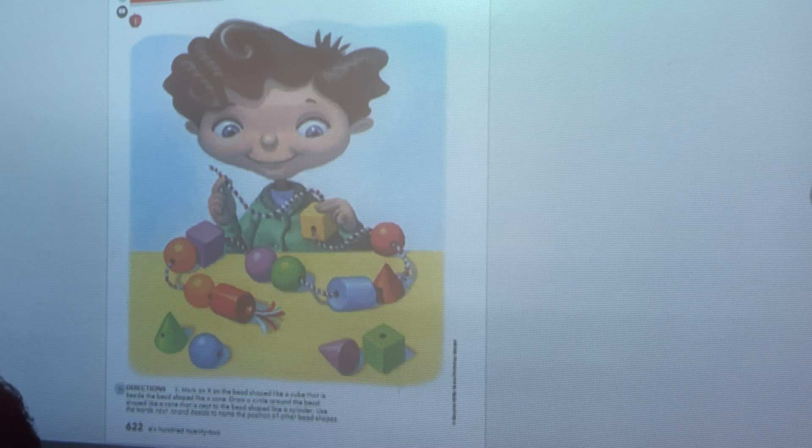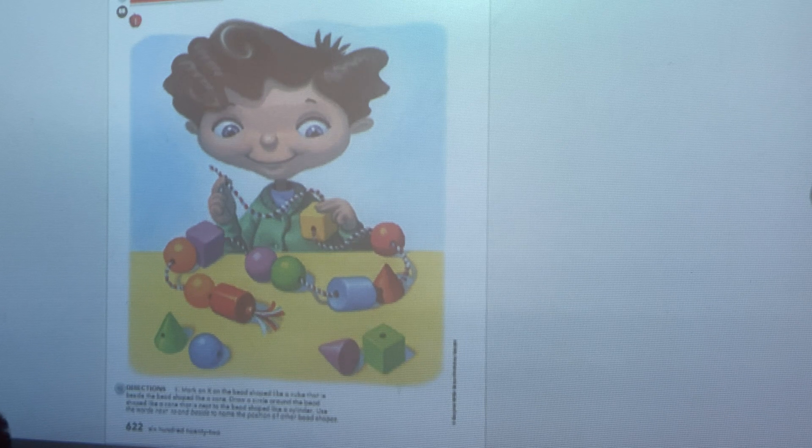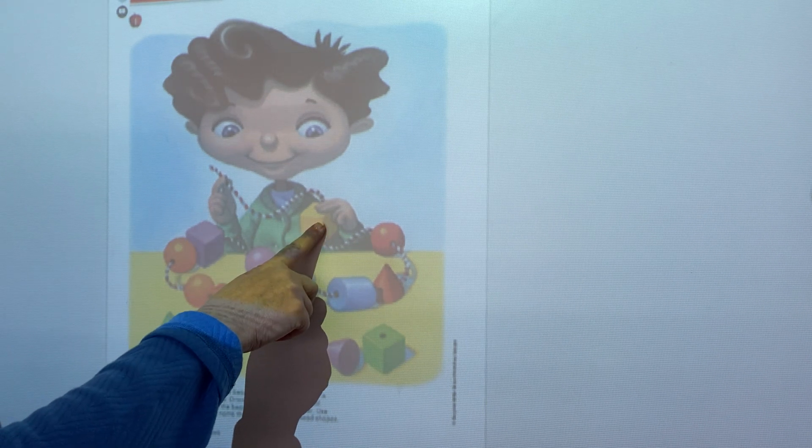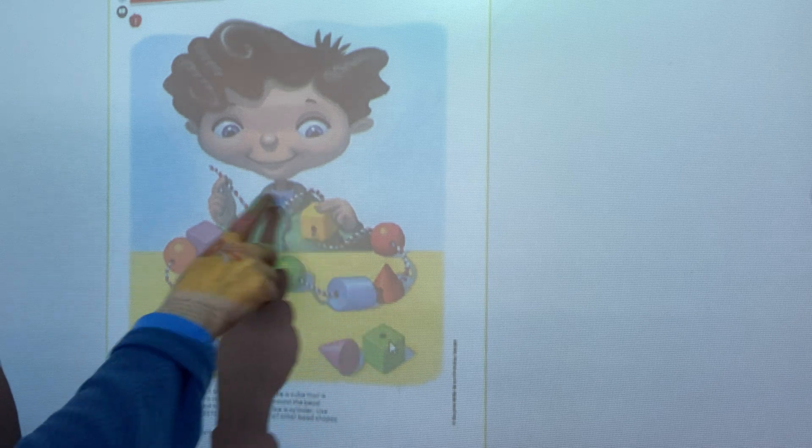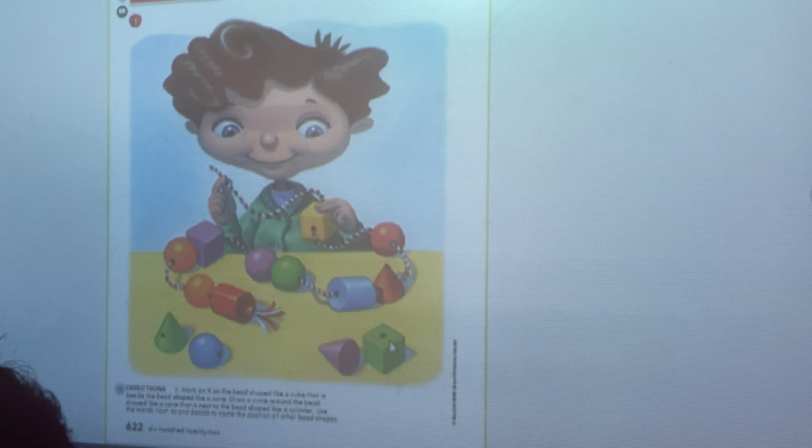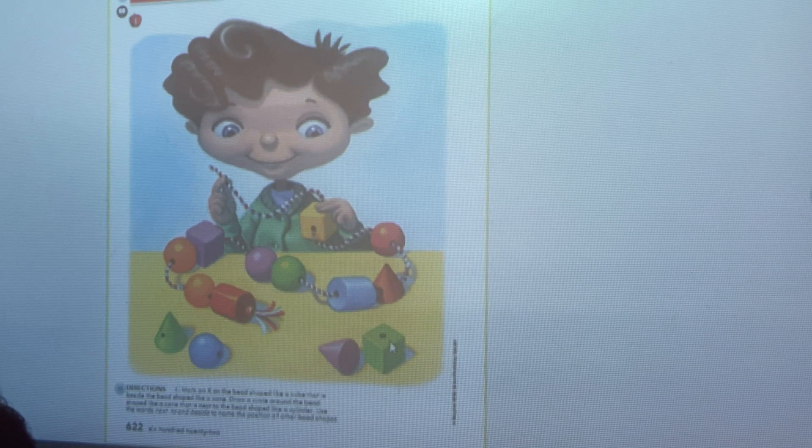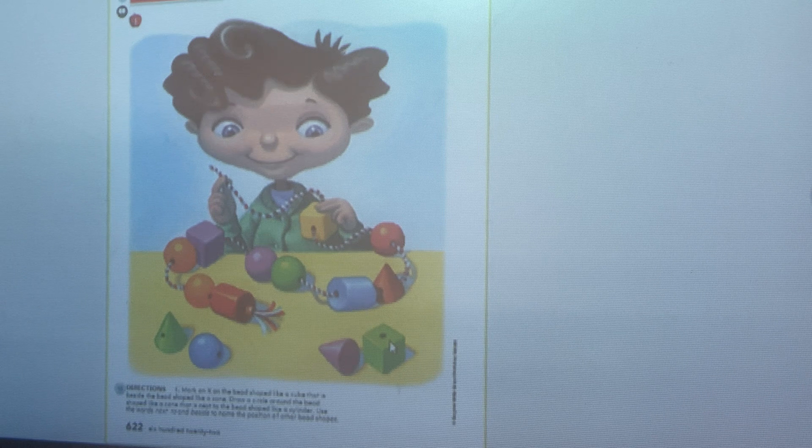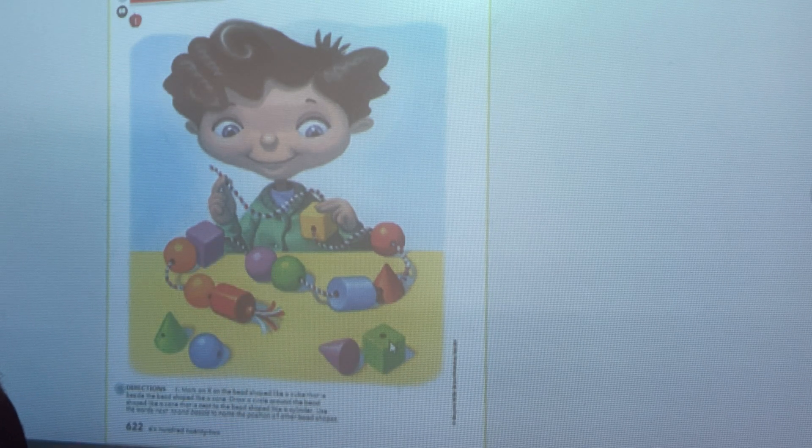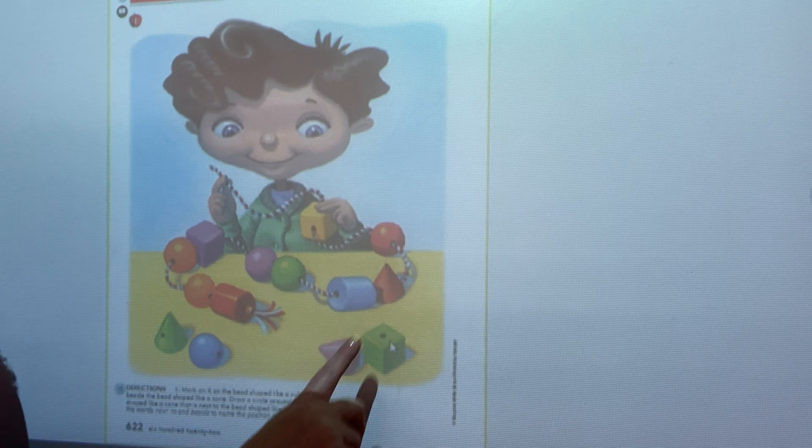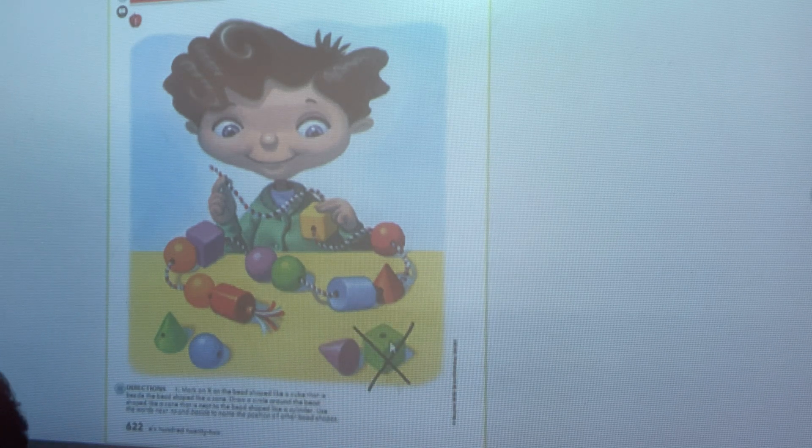Our directions today tell us to put an X on the bead that is shaped like a cube. This is a cube and this is a cube and this is a cube. So we know we're going to put an X on one of those three cubes. I want you to put an X on the cube that is beside the bead that is shaped like a cone. Which of these cubes is beside a shape like a cone? Can you tell? Yeah, it's that green one right there. So go ahead and put an X on that. Excellent job.